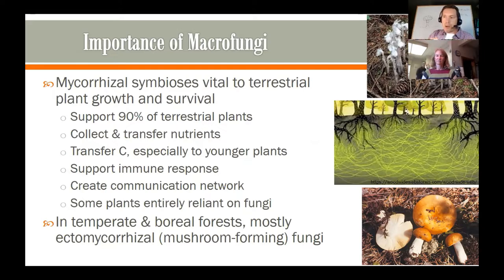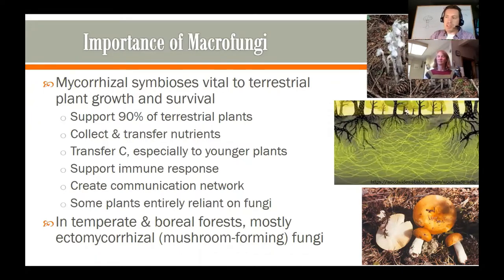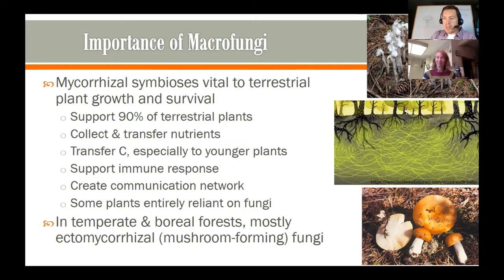In the tropics, a lot of the fungi involved in these associations are species that don't form mushrooms, but in the temperate and boreal forests, most of the associations we see are with mushroom-forming fungi. So in this case it is a macro fungus — in the form of mushrooms like this species of Russula — that is one of thousands of species of mycorrhizal fungi we have in Canada.